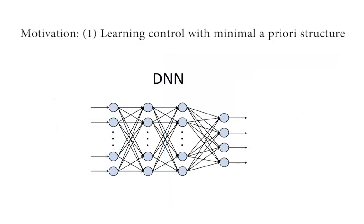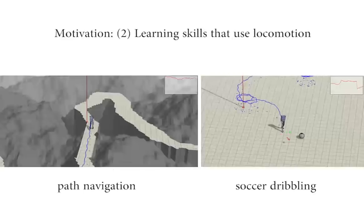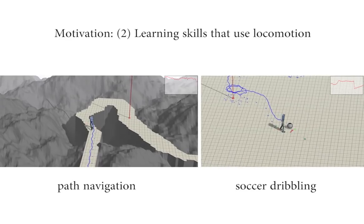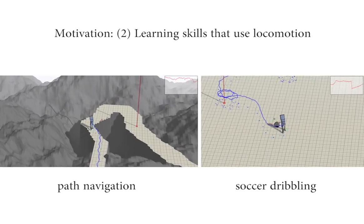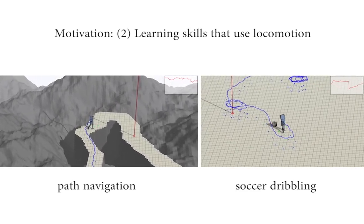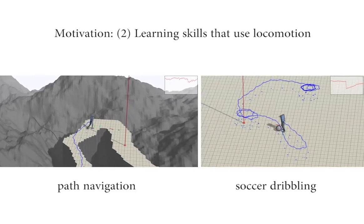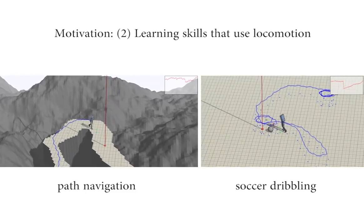By using deep neural networks and reinforcement learning in our approach, we avoid the need for such prior knowledge. We are also motivated by learning high-level skills that require locomotion, such as path following and soccer dribbling. These tasks require planning and interaction with the environment.